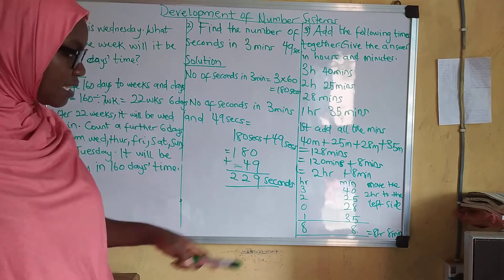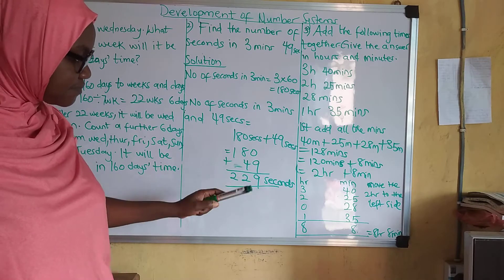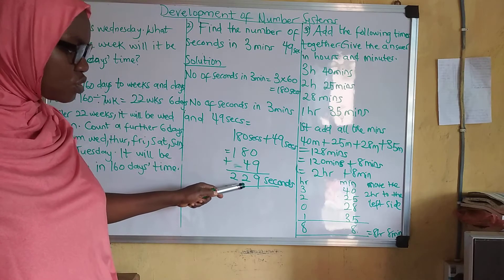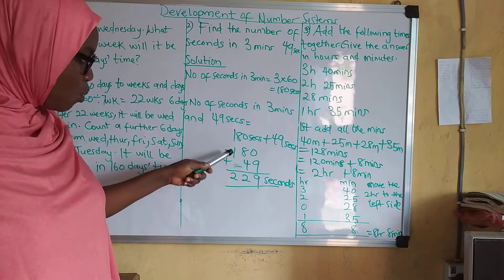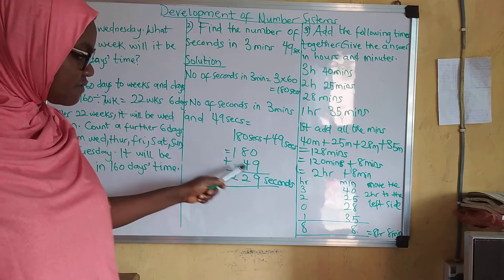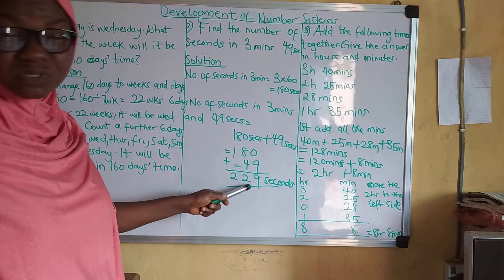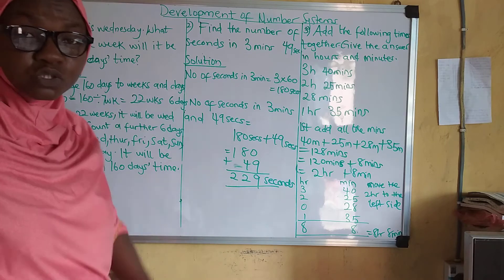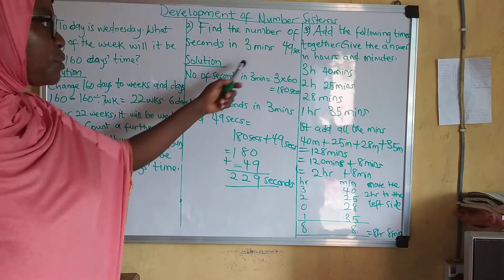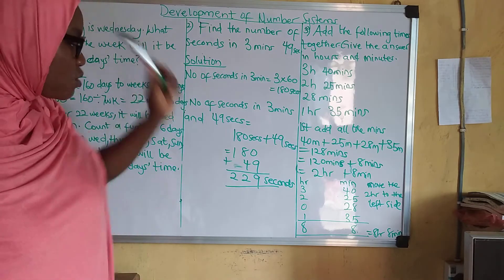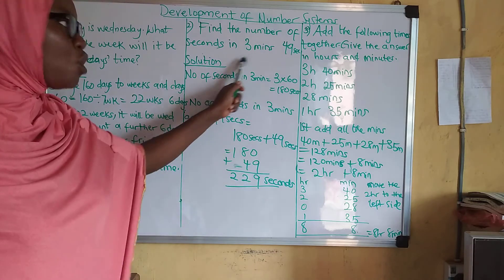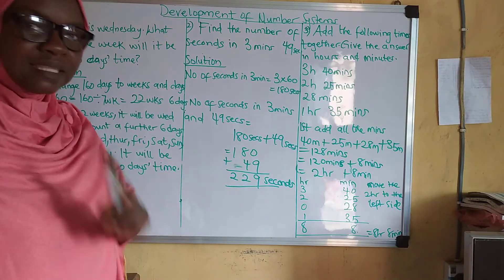Let's do it together. 0 plus 9 is 9. 8 plus 4 is 12, so I write 2 and carry 1. 1 plus the carried 1 makes 2. So that is 229 seconds in total. In 3 minutes and 49 seconds, we have 229 seconds altogether.